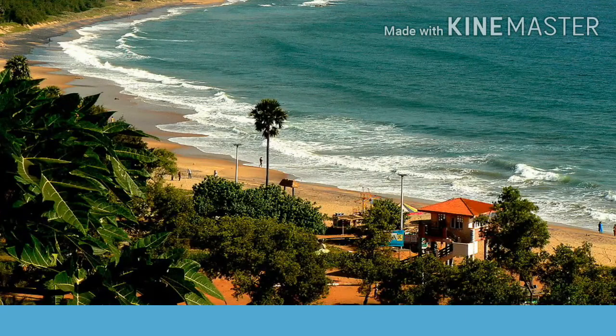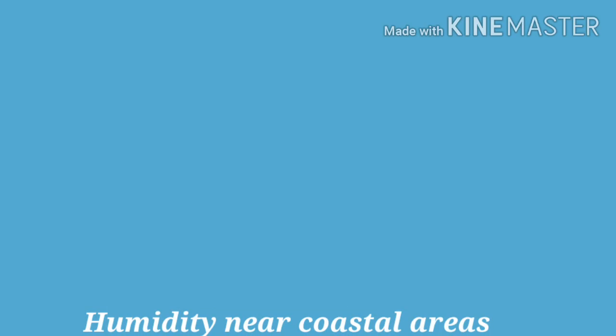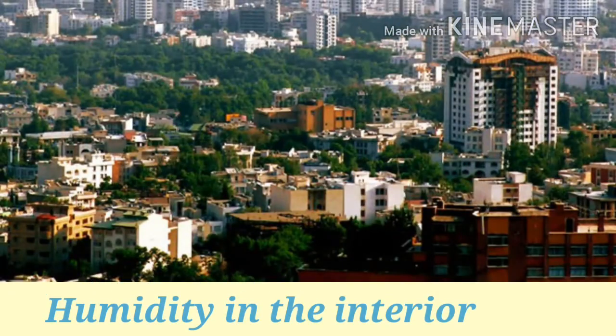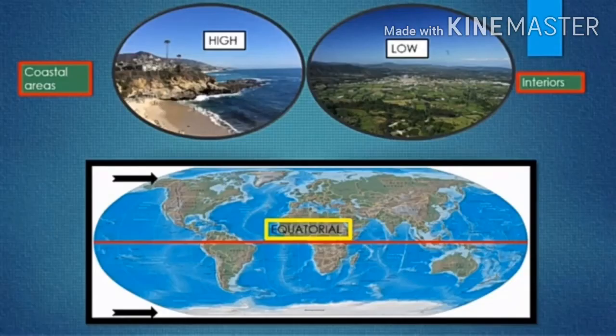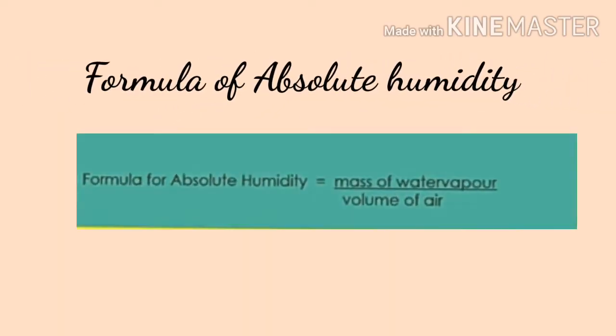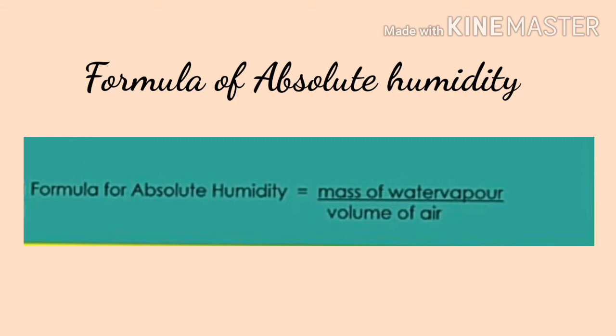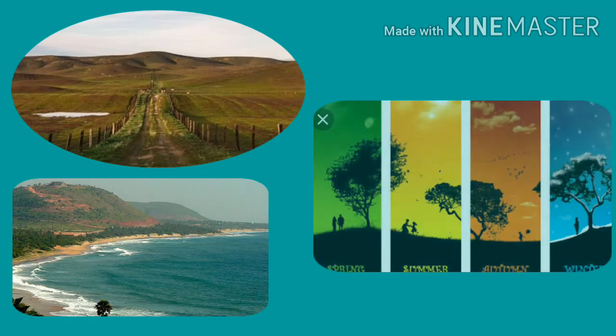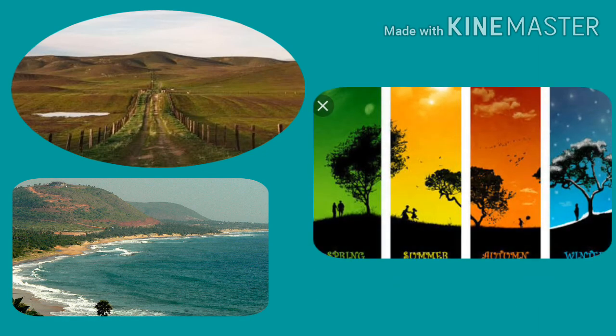The absolute humidity of the air near coastal areas is higher than areas in the interior. Absolute humidity is higher in the equatorial areas, while it reduces as we move towards the poles. The formula for absolute humidity is: Absolute Humidity = mass of water vapor ÷ volume of air. The distribution of land and water on the earth and seasons also affect absolute humidity.